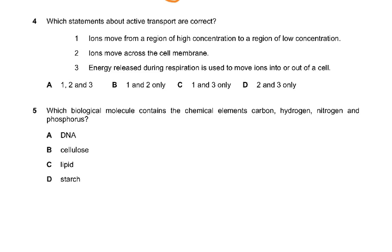For question 4, the answer involves options two and three. Active transport moves substances from low to high concentration, so option one cannot apply here — if one is included in an answer choice, you can eliminate it. That leaves the correct combination.